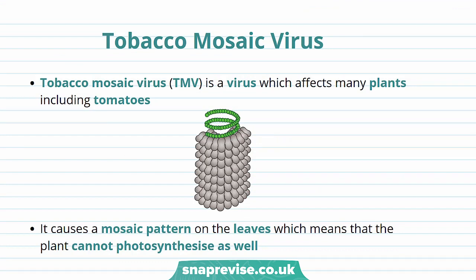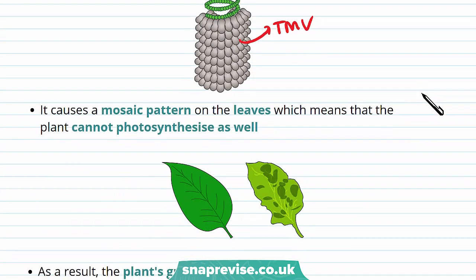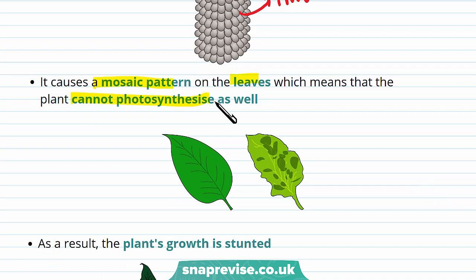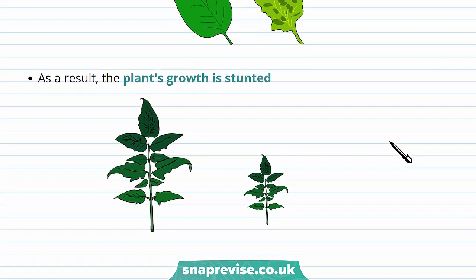Viruses can also infect plants, meaning plants can also have viral diseases. One example of a plant viral disease is Tobacco Mosaic Virus, also known as TMV, which affects many plants including tomatoes. It was discovered in 1930. TMV causes a mosaic pattern on the leaves, meaning the plant can't photosynthesise as well. You can see here that this leaf is discoloured, because TMV stops chloroplasts from forming. As a result, the plant's growth is stunted. Although it doesn't kill the crop, it might cause the quality or quantity of the crop to go down, causing economic damage to farmers.